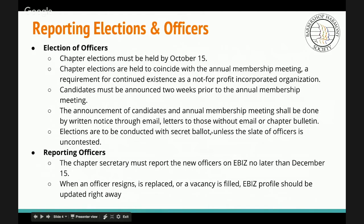Election of Officers. Chapter Elections must be held by October 15th, coinciding with your annual meeting. This is a requirement for continued existence as a not-for-profit incorporated organization. Candidates should be announced two weeks prior to the annual membership meeting, and the announcement should be done in writing, usually through email or letters. Elections are to be conducted with secret ballot unless the slate of officers is uncontested.